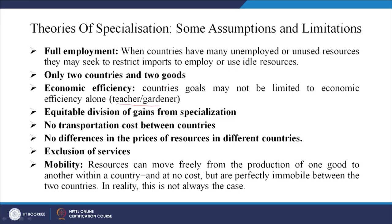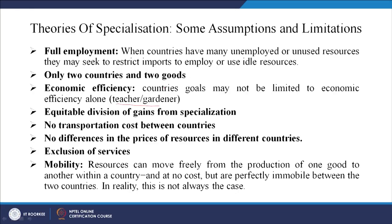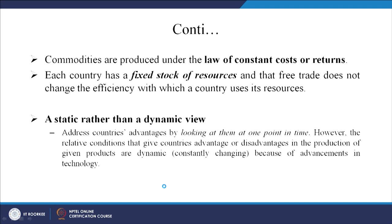Additional assumptions include: no differences in resource prices between countries; services were excluded from the theory. Regarding mobility, resources are assumed to move freely from one good to another within a country at no cost, but this is not always true in reality. Commodities are assumed to be produced under constant costs, but costs vary due to policy changes and material availability. Each country is assumed to have a fixed stock of resources, which may also not hold true.